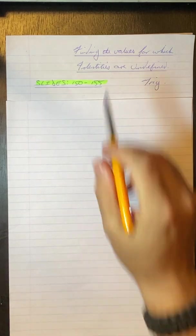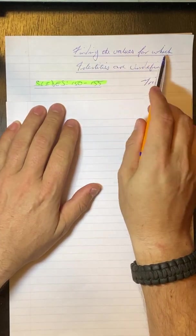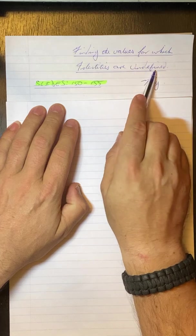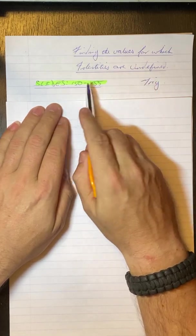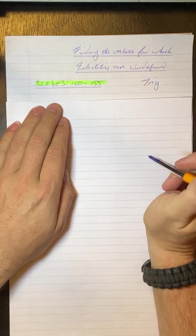Hello grade 11s. Today we're going on to finding the values for which identities are undefined, working from slides 150 to 155 from the trig PowerPoint.